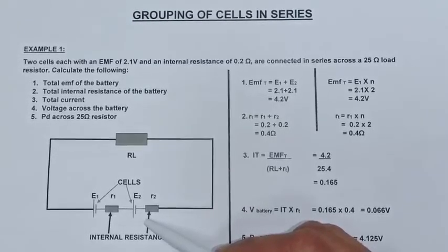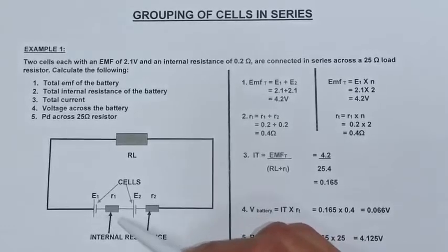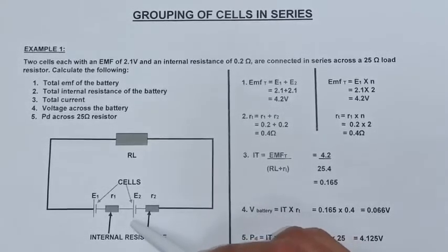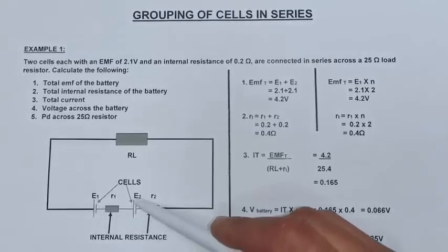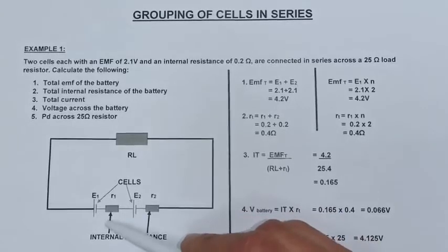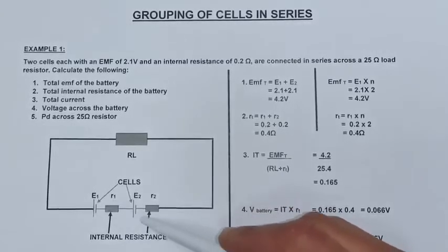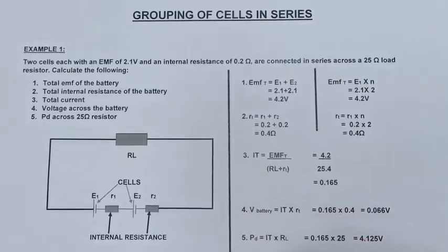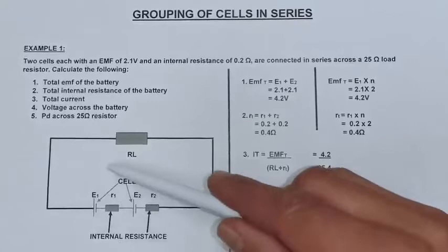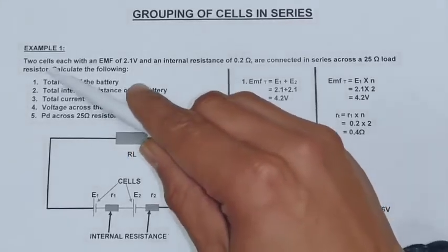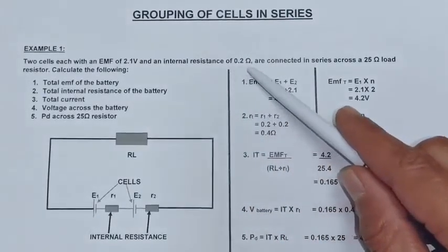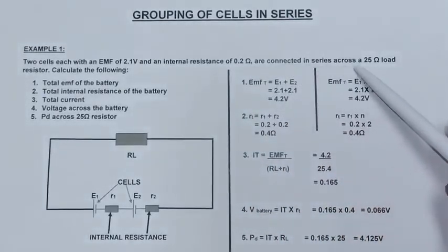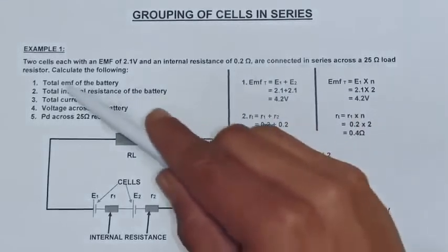Please keep in mind that when we talk about cells and internal resistances of a battery, they are identical, which means the voltage over one cell will be the same as the other, and the ohms value of one internal resistance will be the same as the other. In my first example, two cells each with an EMF of 2.1 volts and internal resistance of 0.2 ohm are connected in series across a 25 ohm load resistor.